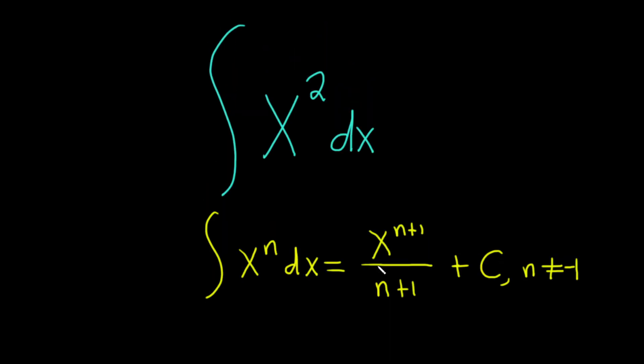So in this particular case n is 2. So this is equal to x to the 2 plus 1 over 2 plus 1 plus c.